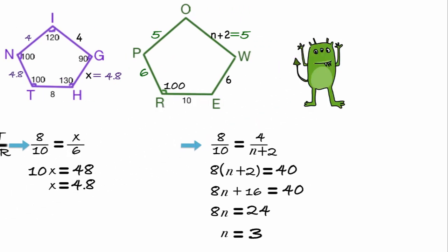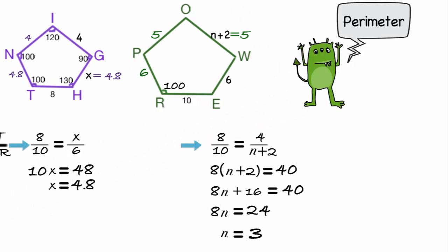So what would be the similarity ratio for perimeter of two similar polygons? Well, I've gone ahead and filled in the rest of the lengths of the sides. So by adding the distance around, we find that night has a perimeter of 25.6 and power has a perimeter of 32. So the ratio for the perimeter would be night over power, or 25.6 over 32.